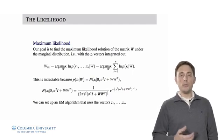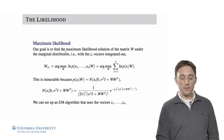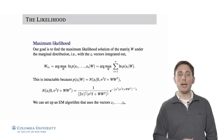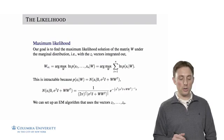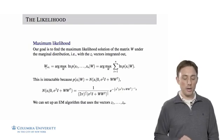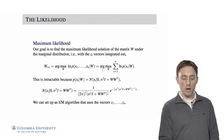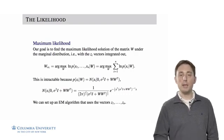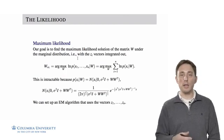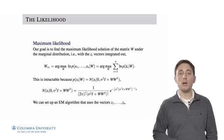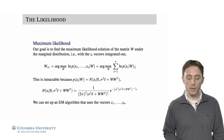The way that we're going to do this is through maximum likelihood. Our goal is to find the maximum likelihood solution of the matrix W under the marginal distribution. Our goal is to integrate out all of the Zs, the impact of Z. We want to integrate it out of the model and then do a point estimate that maximizes the marginal likelihood with respect to the matrix W. Because we're going to make an independence assumption among our data, this likelihood is a product of the likelihoods of each observation.